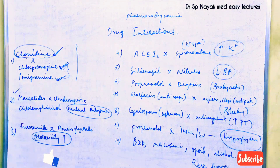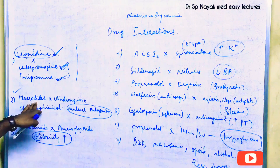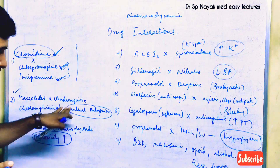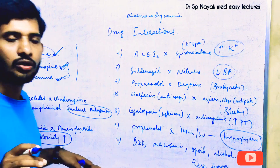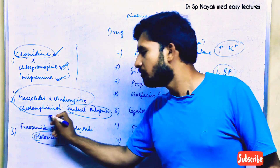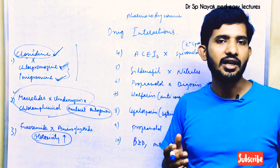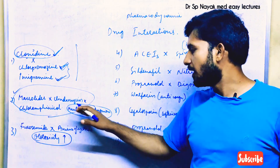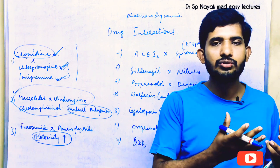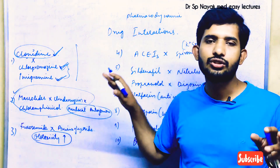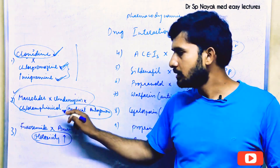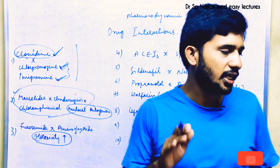The next interaction involves macrolide antibiotics. Azithromycin, clindamycin, and chloramphenicol should not be given in combination. These three drugs will antagonize the antibacterial activity through mutual antagonism, as they compete for binding at the 50S ribosome, stopping antibacterial activity. Never combine macrolide antibiotics with clindamycin and chloramphenicol.